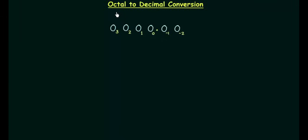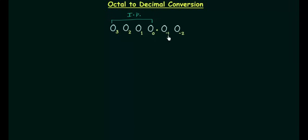In this presentation we will study octal to decimal conversion. Let's say this is the octal number. O0, O1, O2, O3 are the digits of the integer part, and O-1, O-2 are the digits of the fractional part.